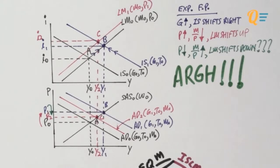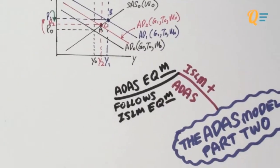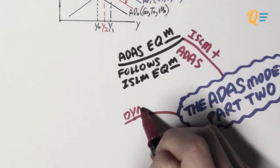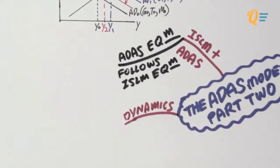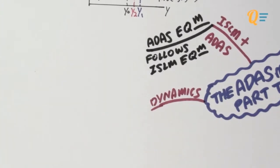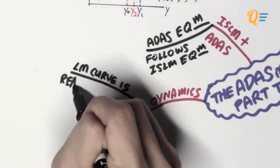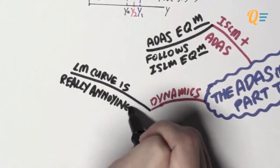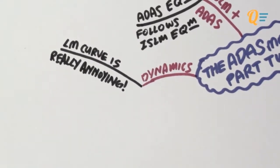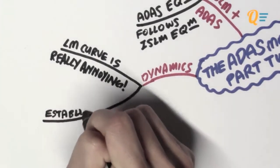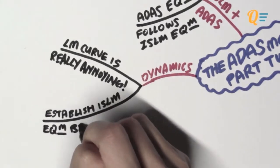But there's no need to worry because Quickenomics believes in making things simple for you to understand. So when we look at the dynamics of the ADES model, there are certain pointers that you should take note of. Firstly, you should know that your LM curve is really, really annoying. And it's really annoying because you have got the price level that's affecting the LM curve. And when the price level keeps changing, your LM curve keeps changing. So you have to really be careful of the LM curve.